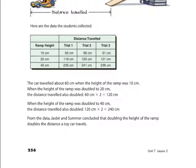So, I mean, some of them are a little bit over, some of them are a little bit more or less. But, generally speaking, their hypothesis seems pretty reasonable from this data. So, they could conclude that doubling the height of the ramp doubles the distance that the toy car travels.